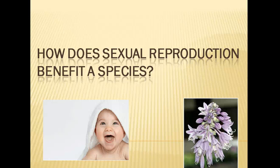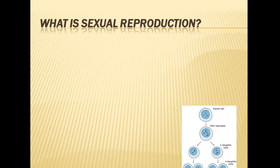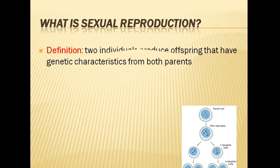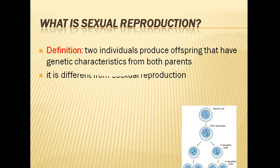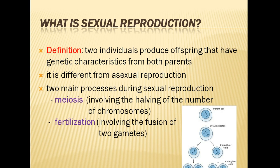How does sexual reproduction benefit a species? First, what is sexual reproduction? Sexual reproduction is when two individuals produce offspring that have genetic characteristics from both parents. It is different from asexual reproduction. There are two main processes during sexual reproduction: meiosis and fertilization.